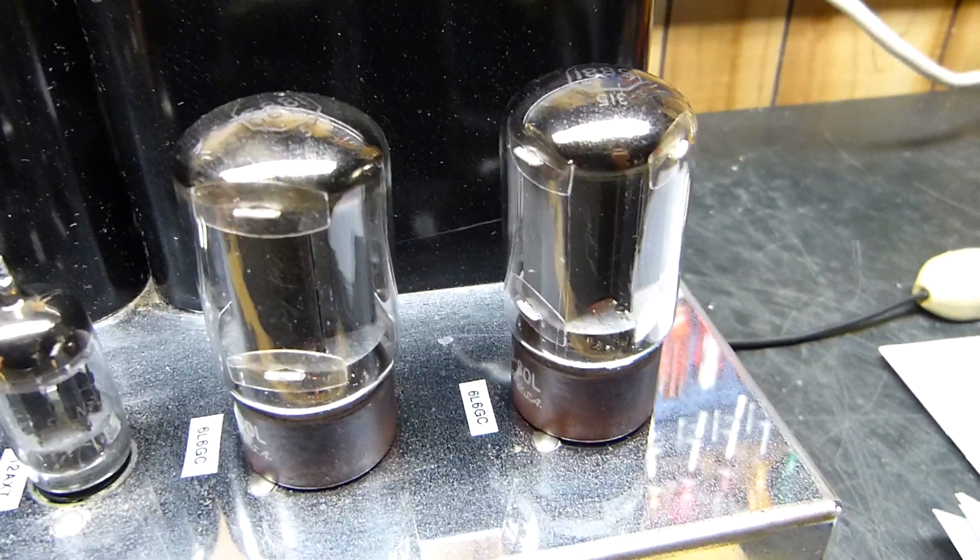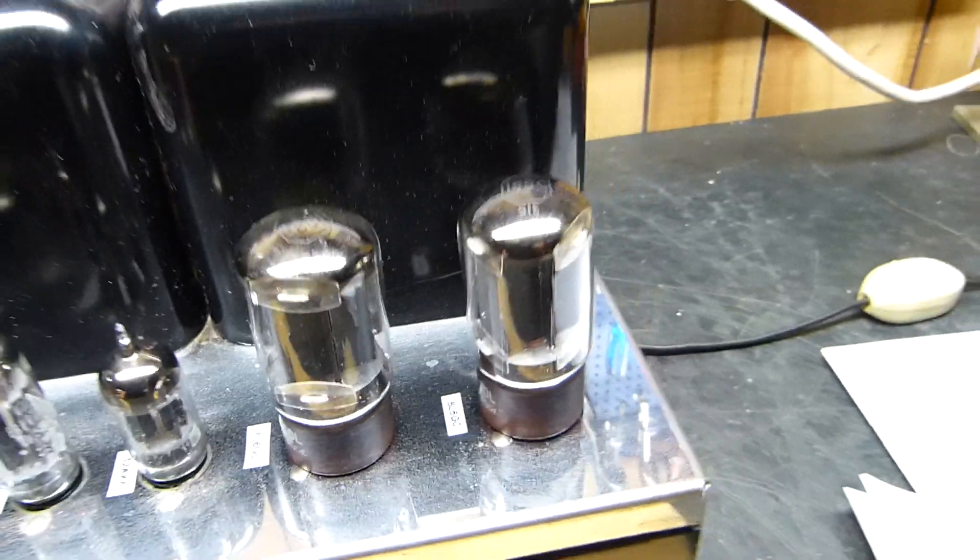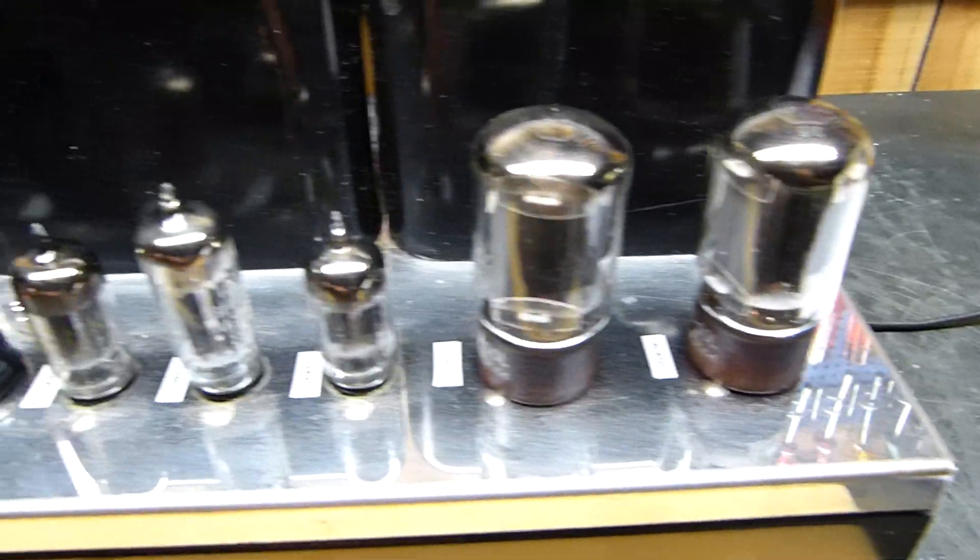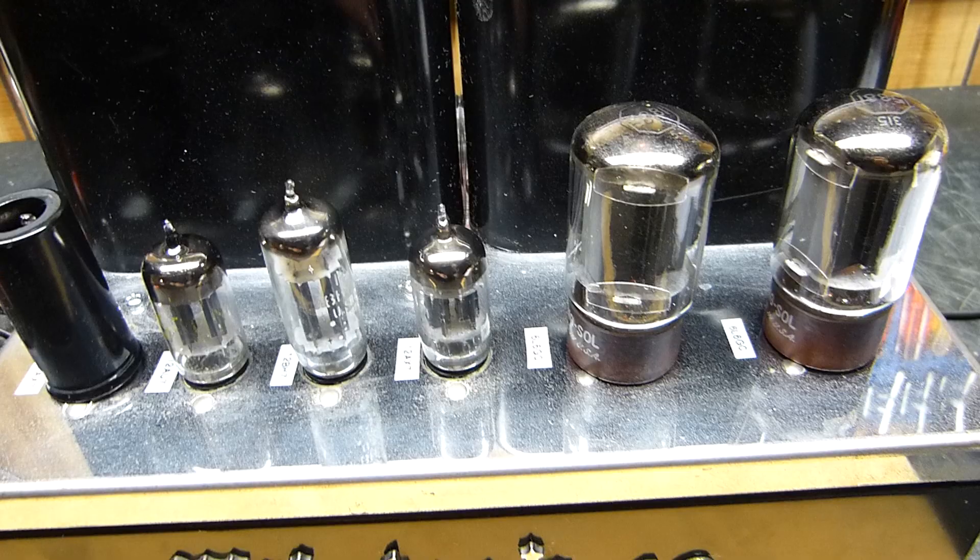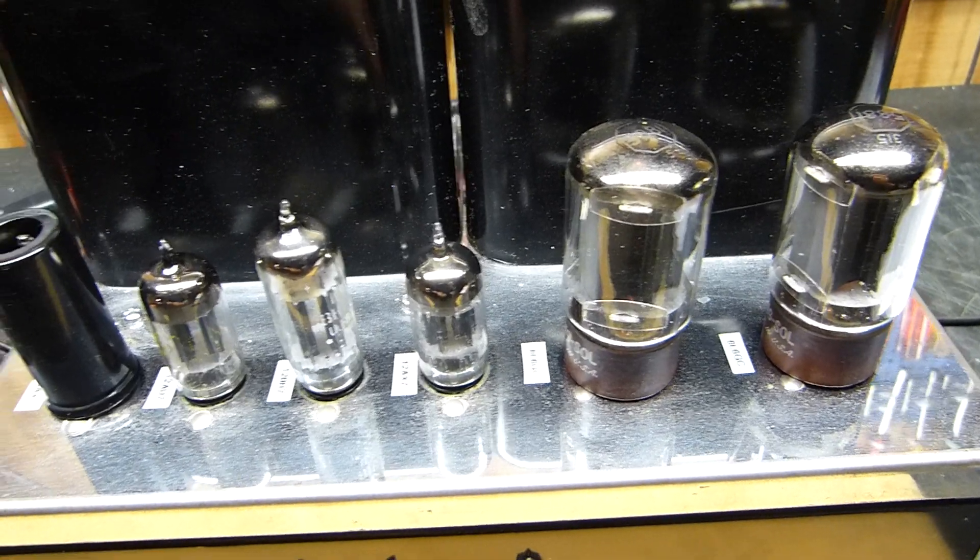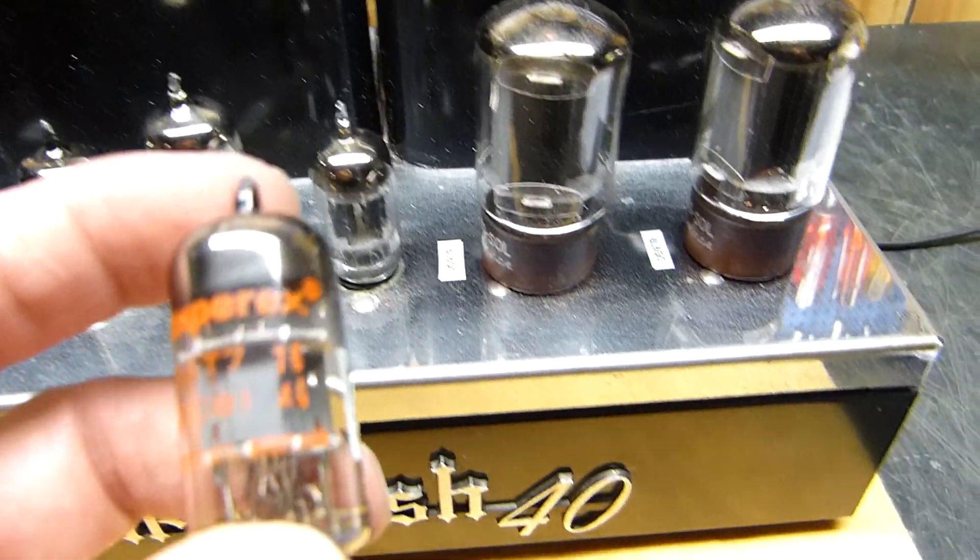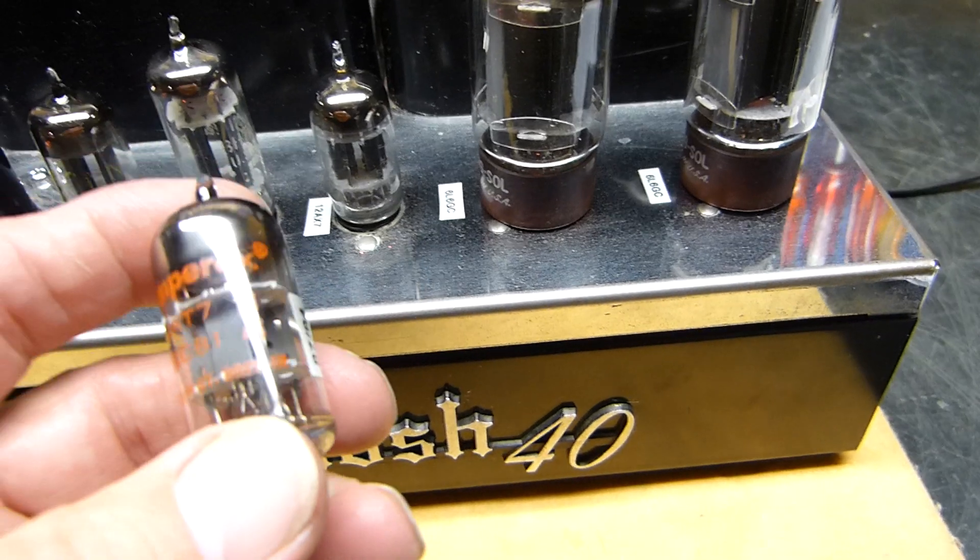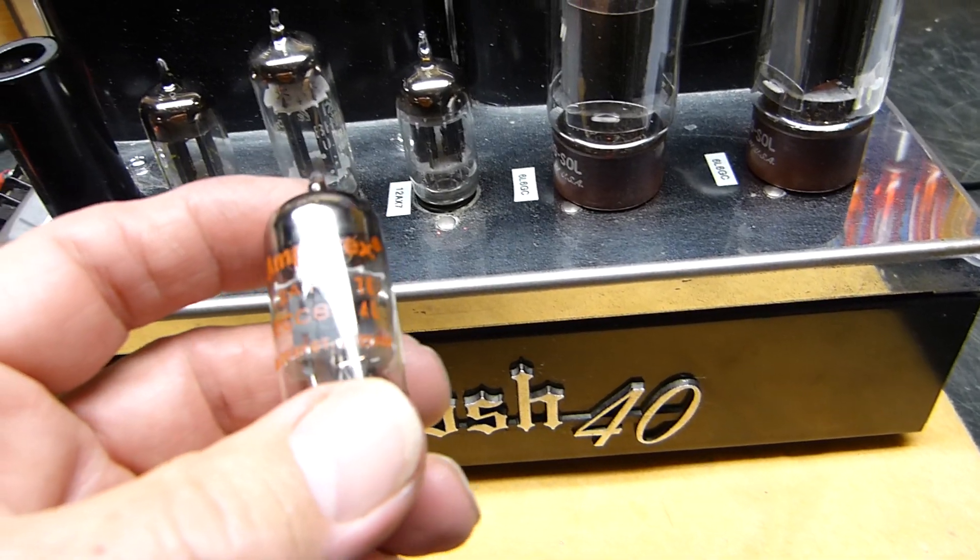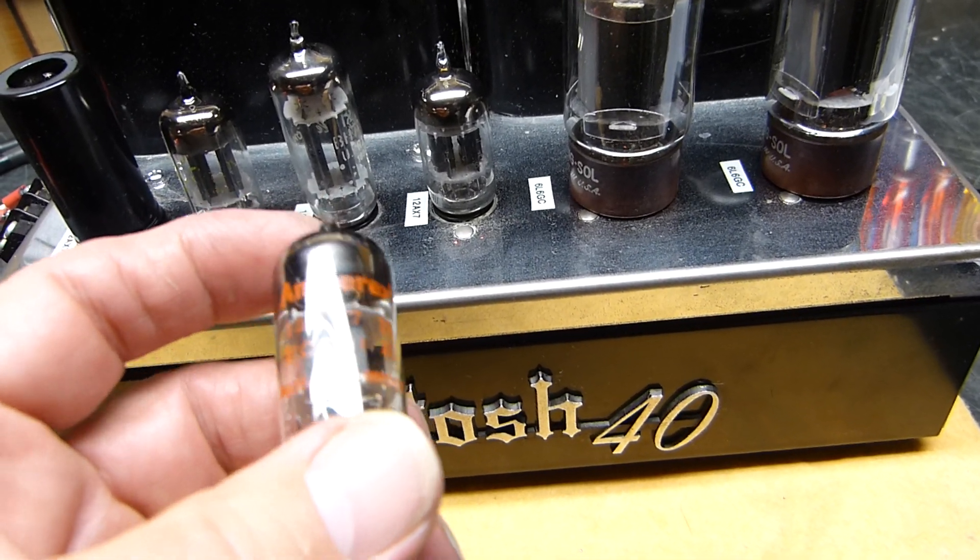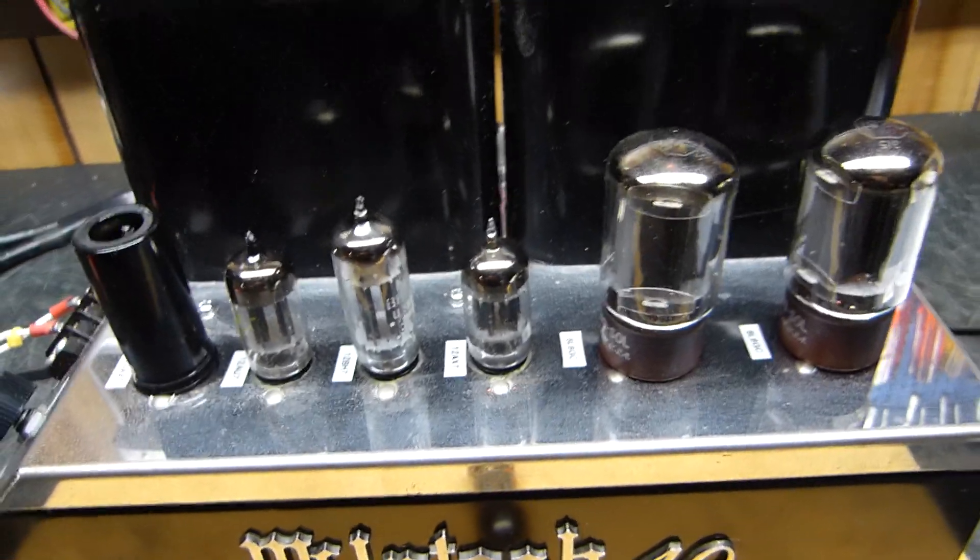And here's the other 5751, really industrial looking guys. I left the output tubes the same for no particular reason, but I'm gonna show you it's pretty amazing how this thing performs with the 12BH7, and then we'll put a fancy Amperex 12AT7 in there.